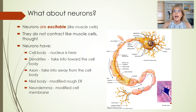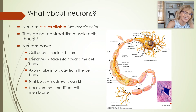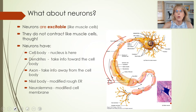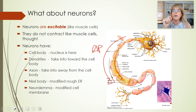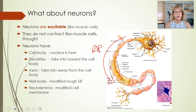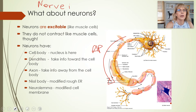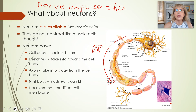The axon takes information away from the cell body, and here is where we get action potentials. By the way, if you are looking up this topic on YouTube, some physiologists call action potentials 'nerve impulses' — so a nerve impulse is the same thing as what I'm talking about as an action potential.